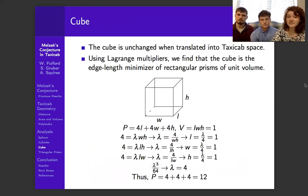So the cube is the only shape that's going to be unchanged when we translate it into taxicab space. So using Lagrange multipliers, which is a way to minimize equations in reference to each other, we find that the minimum of a rectangular prism is the cube, which is going to be 12, which is the same in Euclidean space.